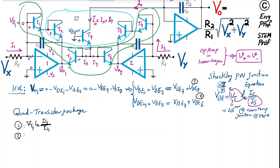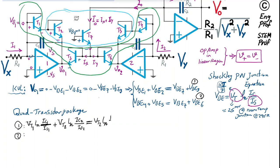Continuing: VBE7 = Vt2 · ln(Iout/Is2) because T7 is in the blue package, and VBE3 = Vt1 · ln(Ix/Is1) because T3 is in the green package. This careful package-based labeling enables us to cancel IS terms.